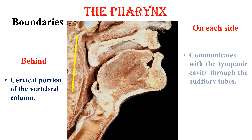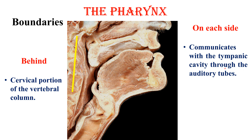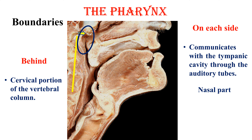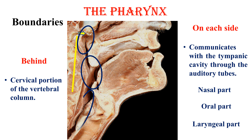On each side, the pharynx communicates with the tympanic cavity through the auditory tube — that opening over here in the nasal part. That is the division of the pharynx: a nasal part, an oral part, and a laryngeal part — these are the three parts of the pharynx.